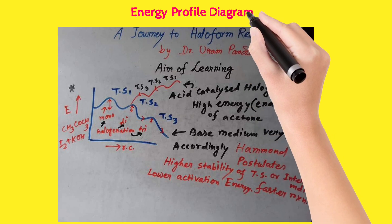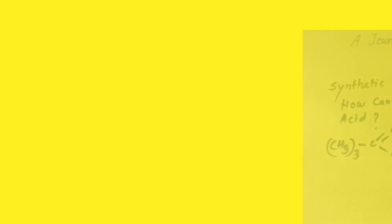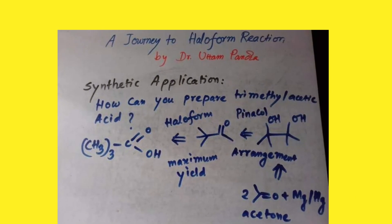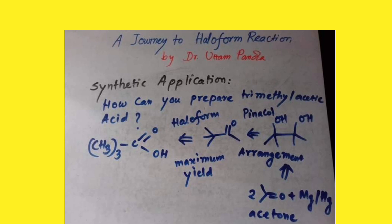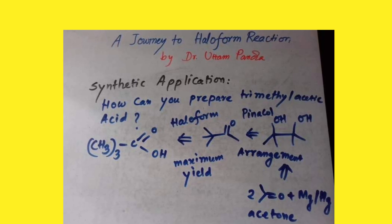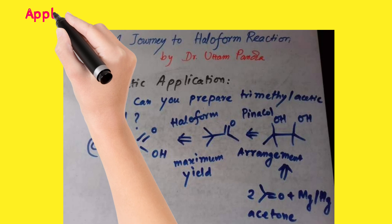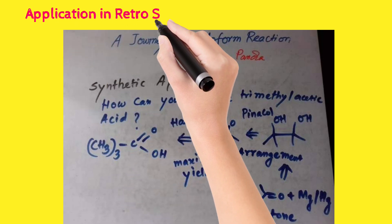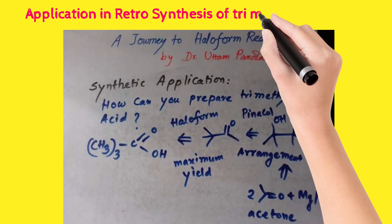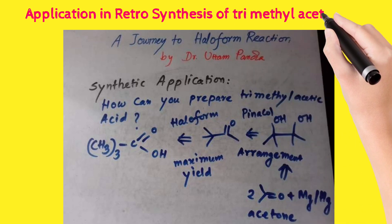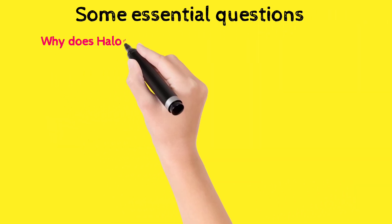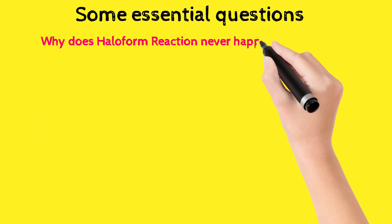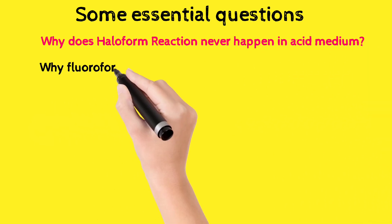Now, why should we learn this haloform reaction? It has potential application in organic retrosynthesis. It is clear from the picture that trimethylacetic acid cannot be easily synthesized through ordinary reactions, but through this haloform reaction we can easily produce it.